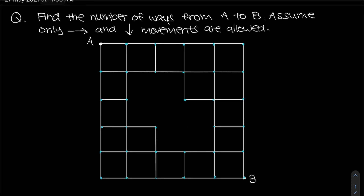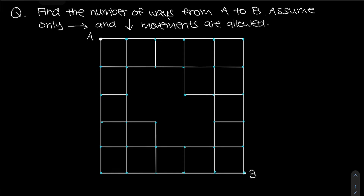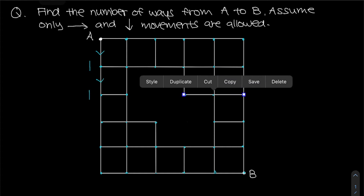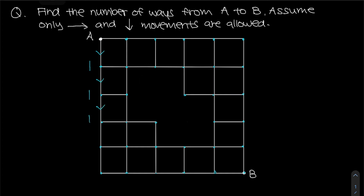Firstly, let's establish that we can only have one way to go down along the left edge, and only one way to arrive at each intersection along the top edge. So the rest along the left column will also be one, one, one, and likewise along the top row: one, one, one, and one.